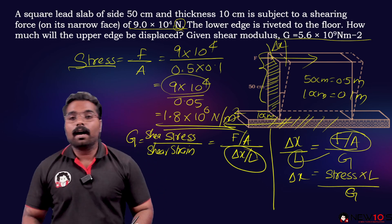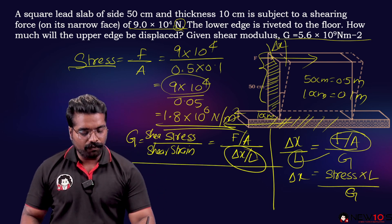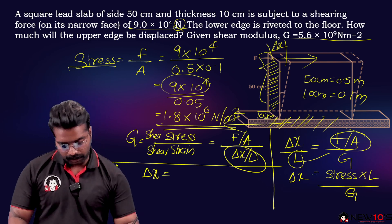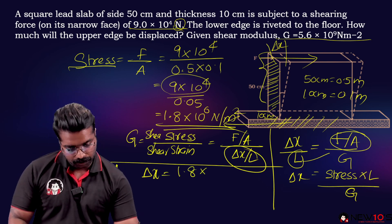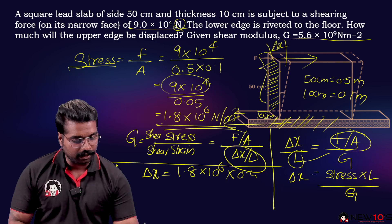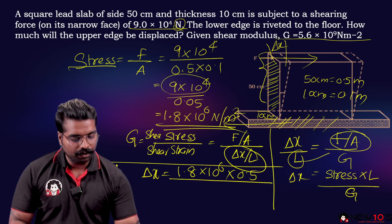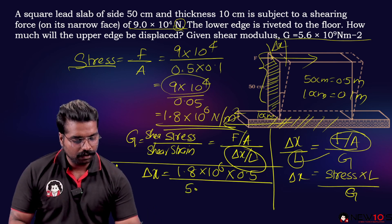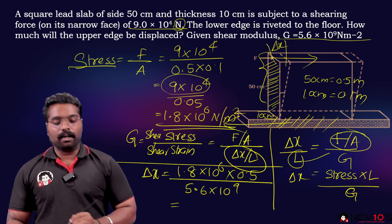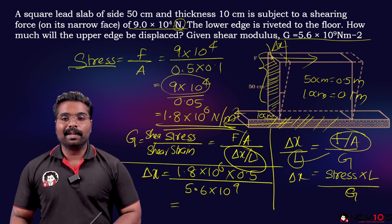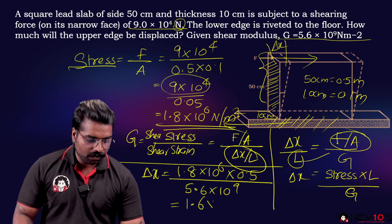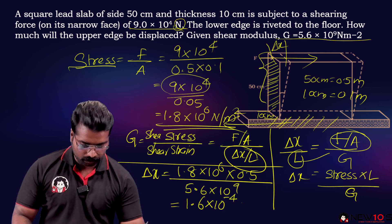Now for the final answer: delta X equals stress × L divided by G. Stress is 1.8 × 10⁶, length is 50 cm (0.5 m), and G is 5.6 × 10⁹ N/m². The calculated displacement delta X is 1.6 × 10⁻⁴ m.